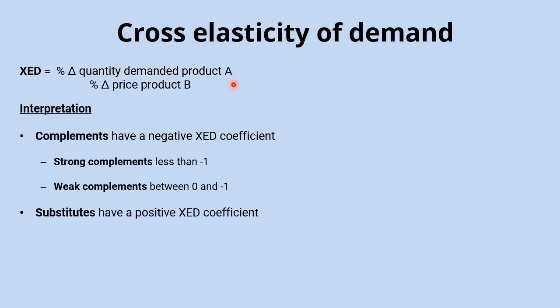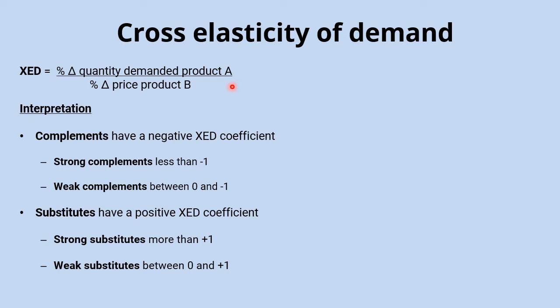Substitute goods have a positive cross elasticity of demand because the changes move in the same direction — increasing bus ticket prices increases taxi demand. A coefficient greater than one means the percentage change in quantity demanded is quite significant relative to the price change; between zero and one it's relatively small. A value of zero shows there's no relationship at all between the two products.